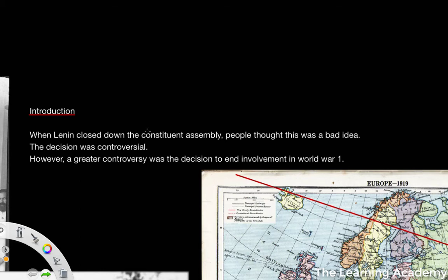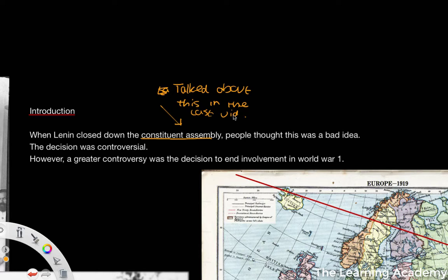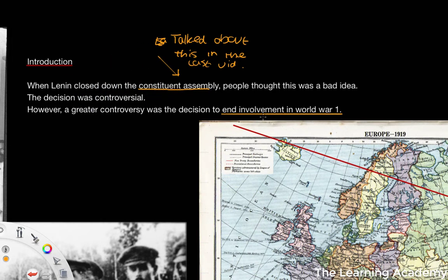When Lenin closed down the constituent assembly — if you remember we talked about this in the last video — a lot of people thought this was generally a bad idea. The decision itself was controversial. However, arguably it wasn't as controversial as the decision to end involvement in World War I. We're going to talk about the reasons for ending involvement, then what ending it meant for Russia, the Treaty of Brest-Litovsk, and finally the consequences, impact, and reactions within the Bolshevik party.